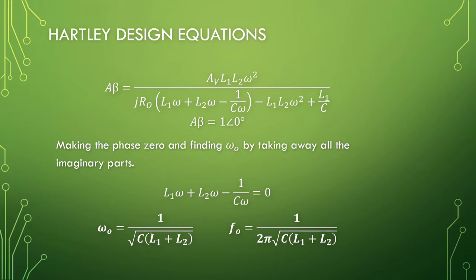The resonant frequency is 1 over the root of the capacitor and the sum of the two inductors. Just add the 2 pi if you want frequency and not radians per second, and that is our oscillation frequency.